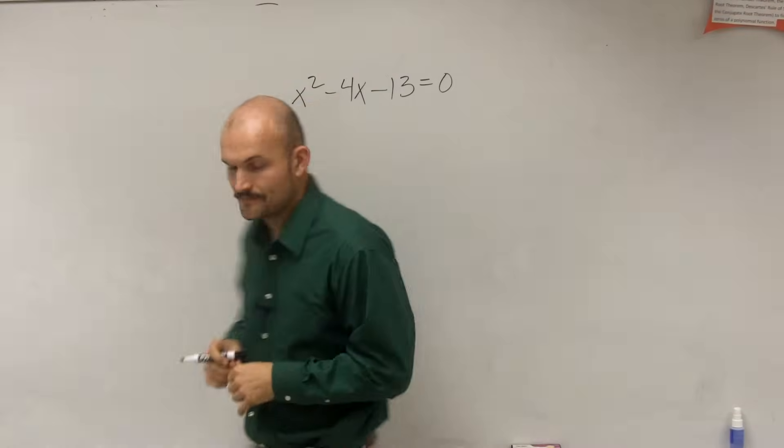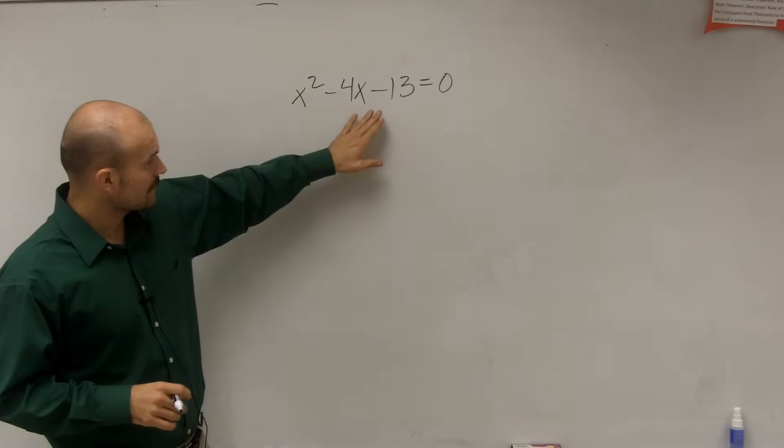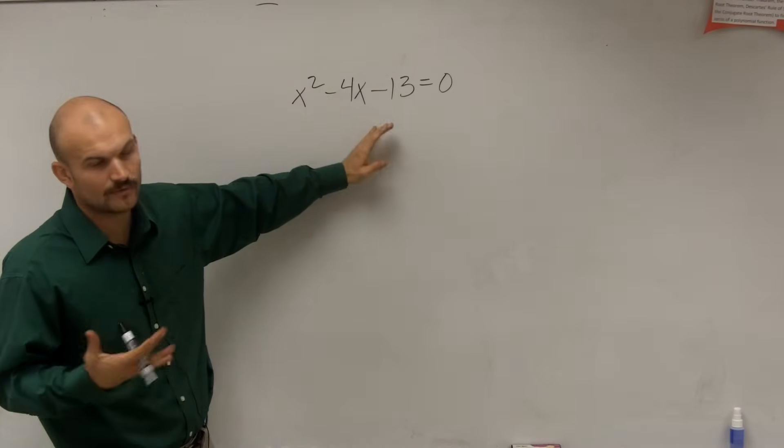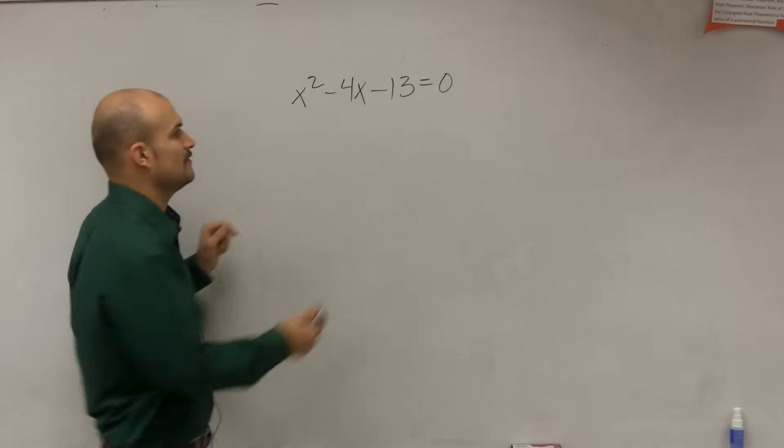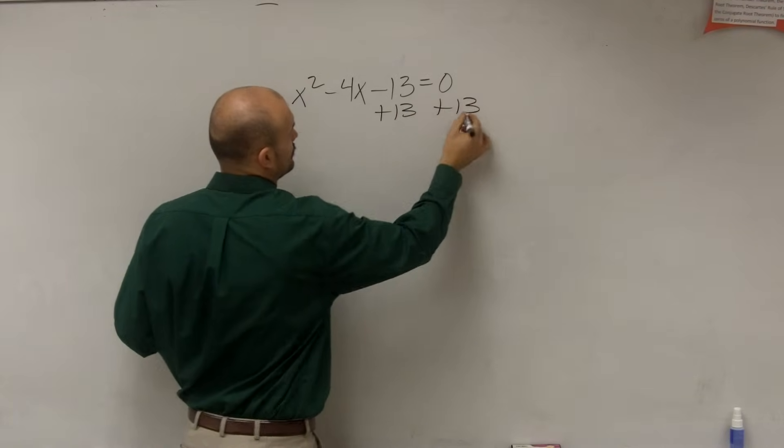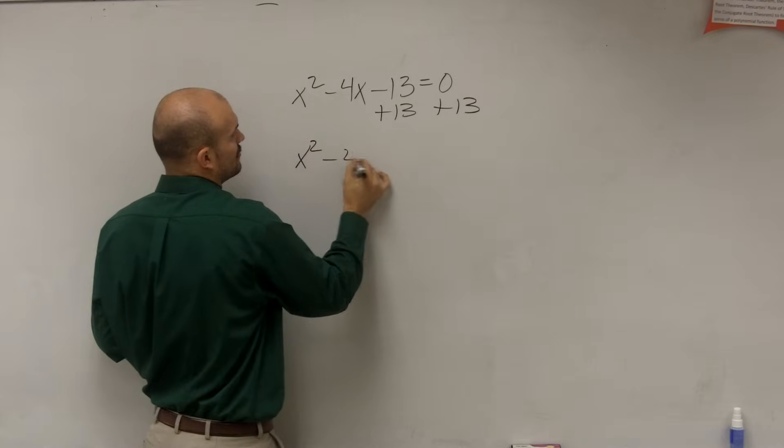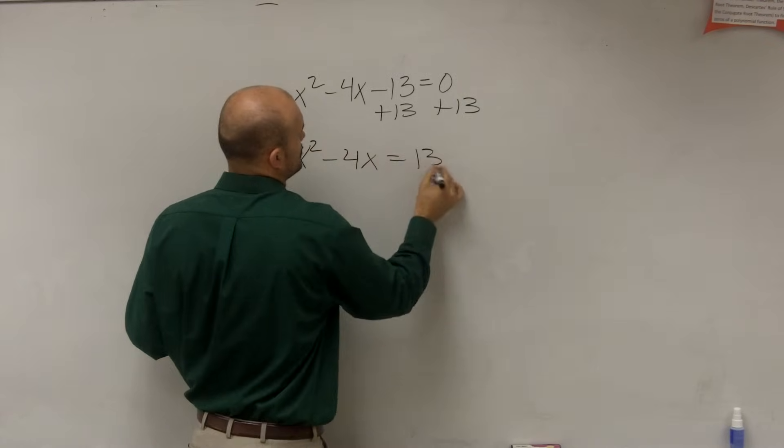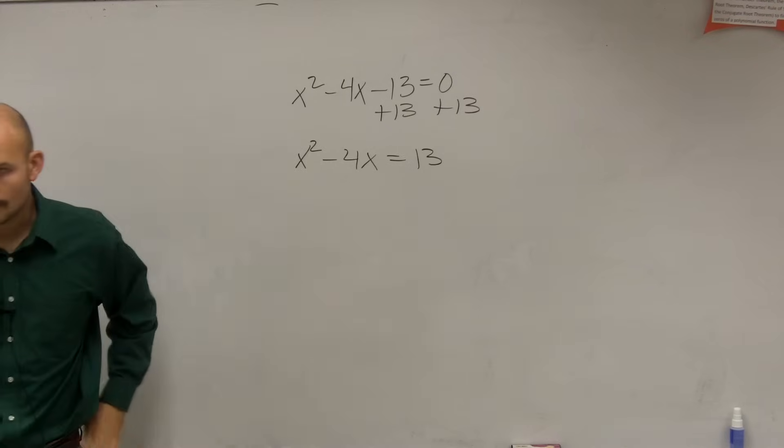So to do that, what we're going to do is we've got to make sure we've got to create a perfect square trinomial. So the first thing I'm going to want to do is get my constant to the other side. So I have x squared minus 4x equals 13.